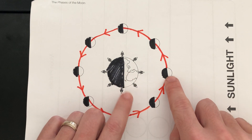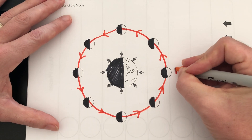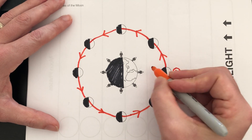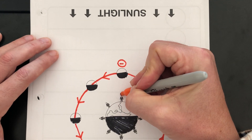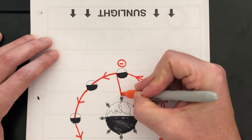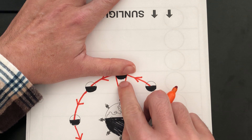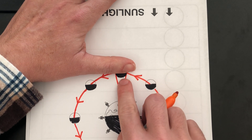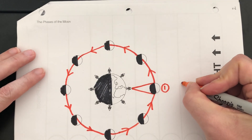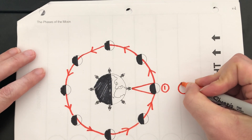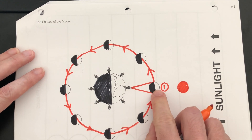Starting between the Earth and the sun — that's going to be the new moon, position number one. From the observer's head, I draw a line to the left side of the moon and also to the right side. Notice what's in the cone — whatever's in the cone is what the observer can see. The observer is seeing a darkened moon. That is the new moon, and it's going to look like a completely dark circle.